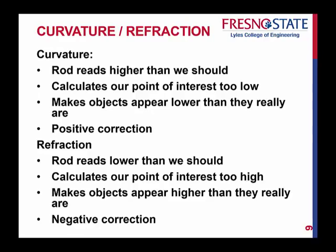The difference between curvature and refraction: curvature causes the rod to read higher than it should, calculating our point of interest way too low — making objects appear lower than they really are — so we apply a positive correction, and this is every time. Refraction causes the rod to read lower than it should, so we calculate the point of interest too high, making objects appear higher than they really are, and we apply a negative correction.